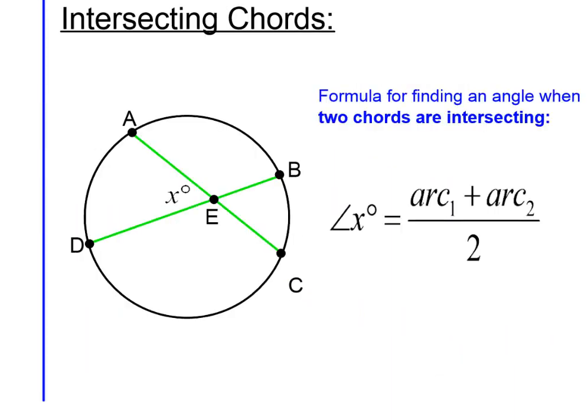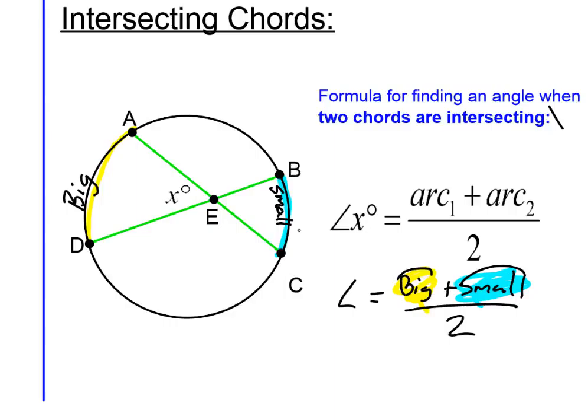When two chords intersect each other inside of a circle, they form four different angles. You can find the measure of these angles by using the following formula. The angle x is equal to arc number 1 plus arc number 2 divided by 2. I like to think about this as the angle equals the big arc plus the small arc divided by 2. The big arc would be arc AD and the small arc is opposite of it, arc BC. Arc number 1 and arc number 2 are the big arc and the small arc, and they're always right across and opposite from the angle.